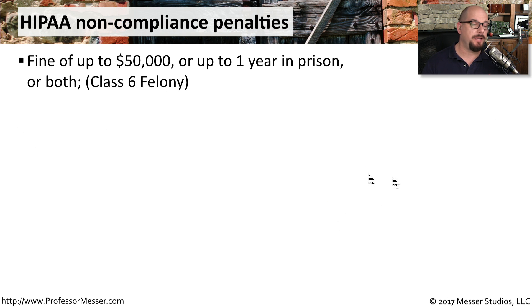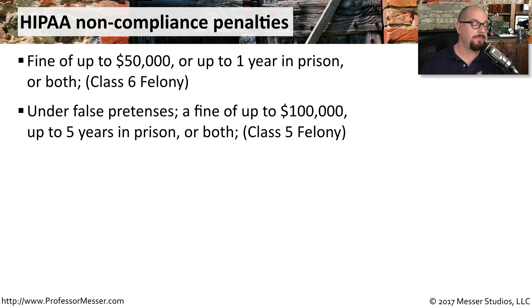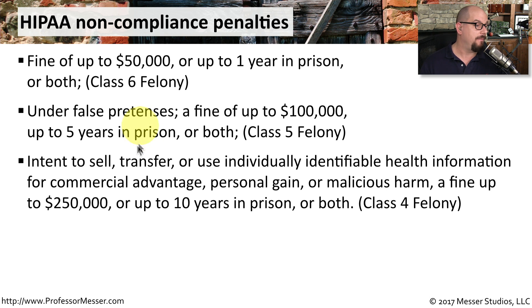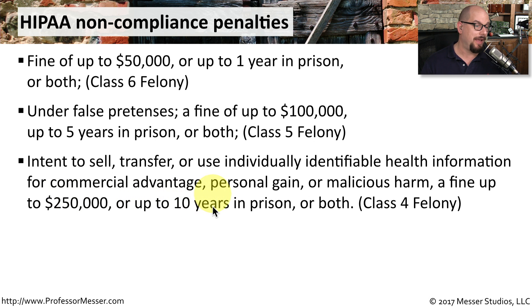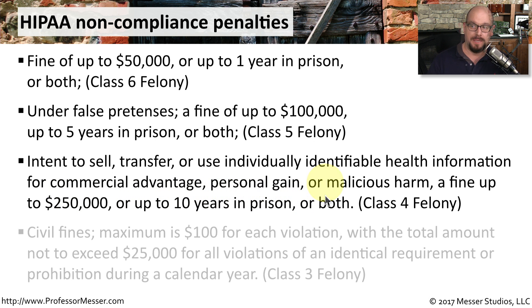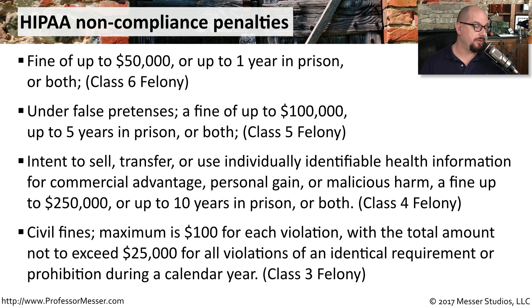One of the most minor penalties that HIPAA has is a fine of up to $50,000 US, or up to a year in prison, or both. If this was done under false pretenses, the penalty goes up to a $100,000 fine and up to five years in prison. If you're planning to sell, transfer, or use health information for commercial advantage, personal gain, or malicious harm, the fine goes up to a quarter of a million dollars and 10 years in prison, or both. There may also be civil fines — the maximum is $100 for each violation, with the total not to exceed $25,000.